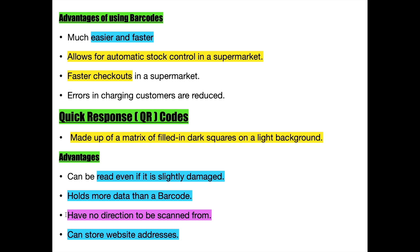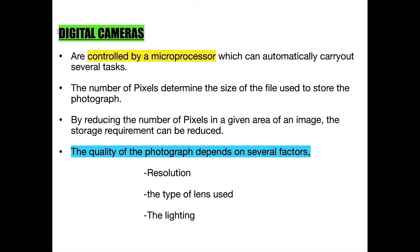Let us now go back to the discussion about input devices. The digital camera is the next input device, and it is controlled by a microprocessor. Various digital cameras take images with different qualities. The quality of an image relies on three factors: the resolution, the type of lens used, and the lighting. Resolution means the number of pixels present, and the number of pixels determines the size of the file used to store the captured image. When the number of pixels is reduced, so does the quality and the amount of storage space required.